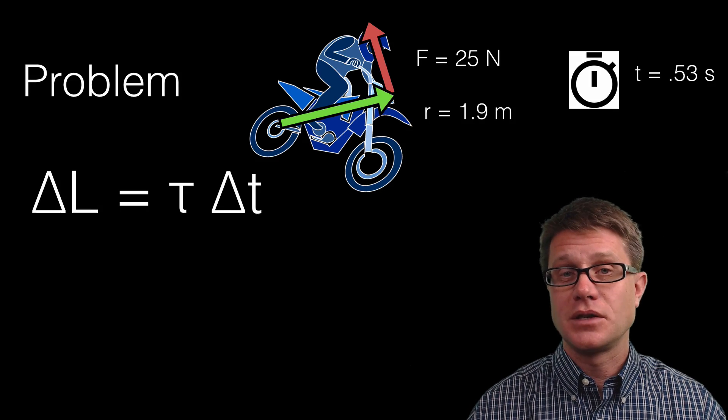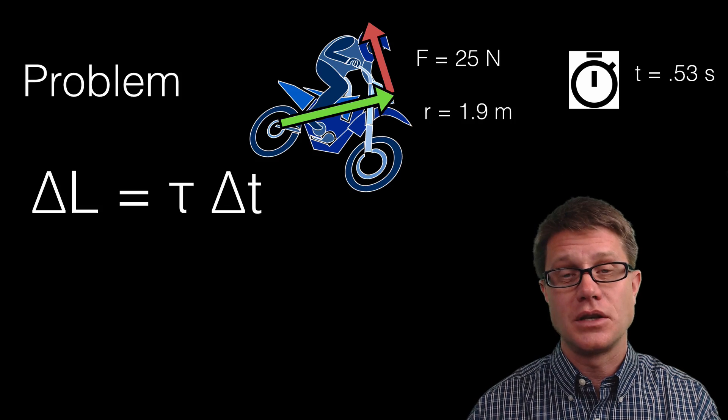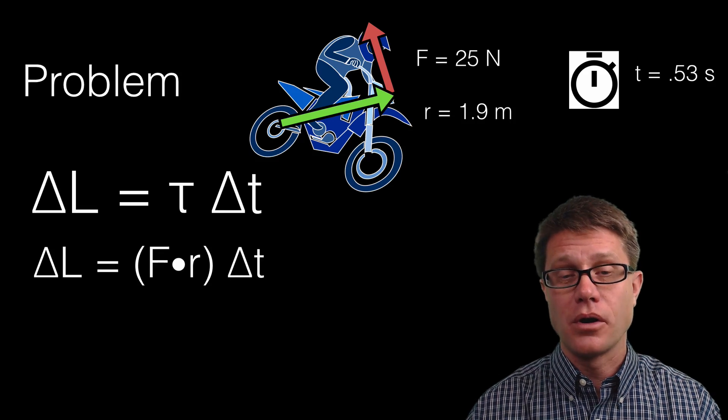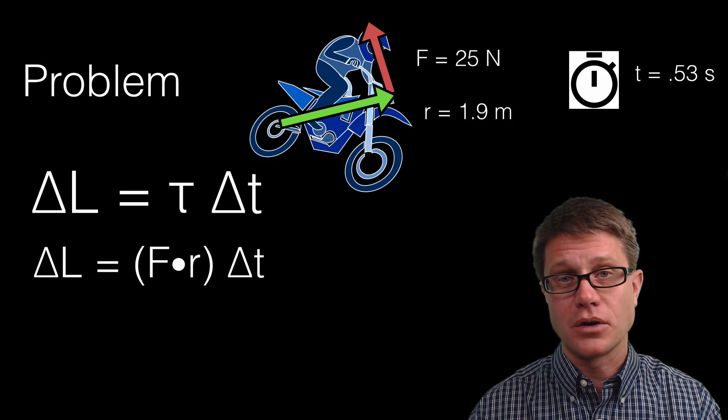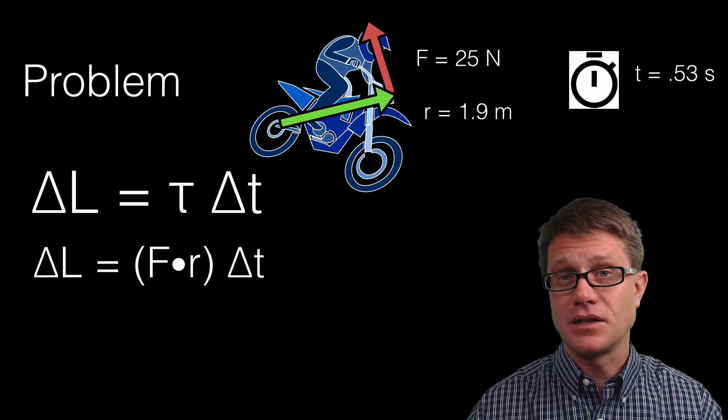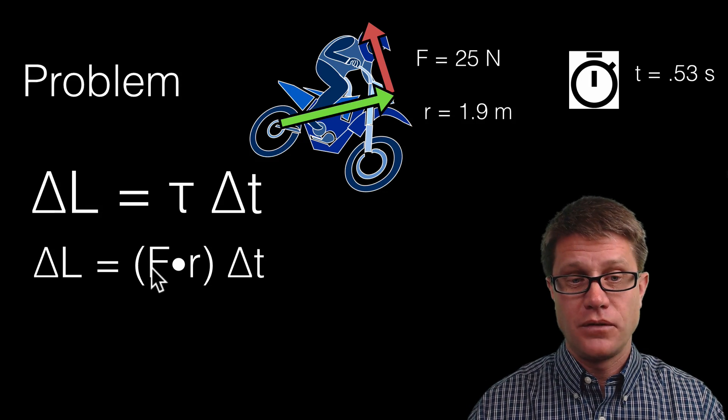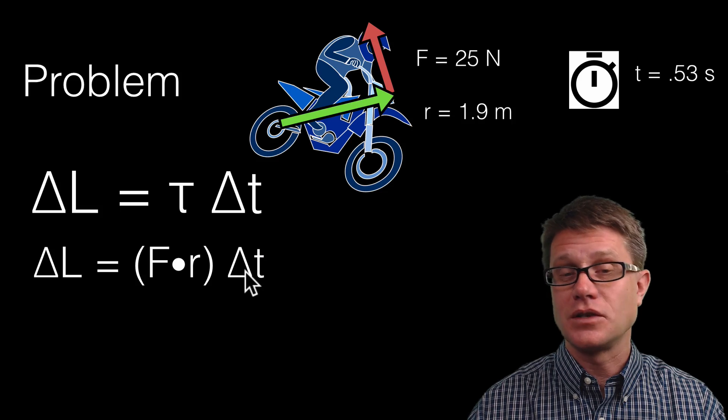So change in angular momentum is simply equal to the torque times the change in time. Now what is our torque? Torque, remember, is going to be the product of the force times that radial distance. And so it is going to be force times radial distance times the change in time.